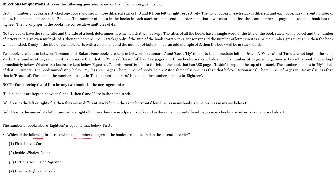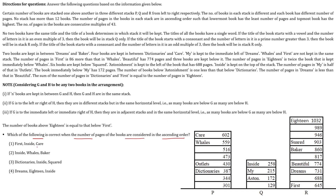Which of the following is correct when the number of pages of the books are considered in ascending order? Option 1: First, Inside, Care — checking the figure. Option 2: Inside, Wells, Baker — Inside is 258, Wells is higher, and Baker follows in ascending order. This is in correct ascending order. Option 3: Dictionary at 387, Inside at 258, Squared at 903 — not in ascending order. Option 4: Dreams at 731, 18 is more, but Inside is less — not possible. Hence the correct answer is option 2.